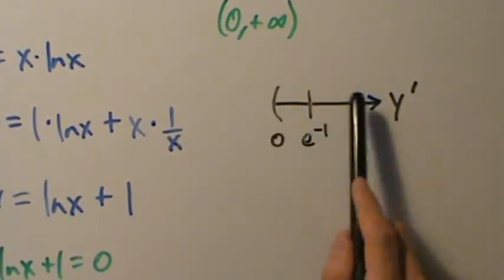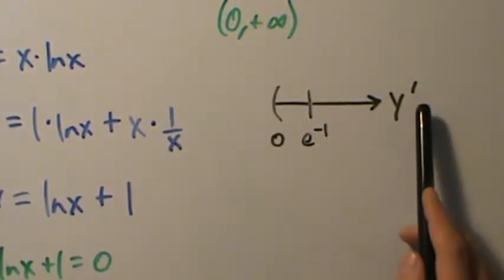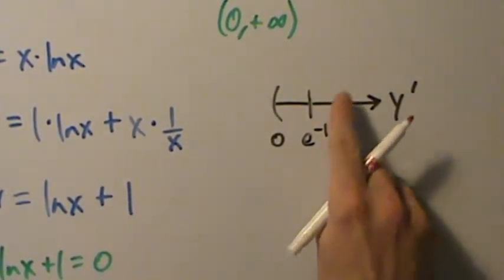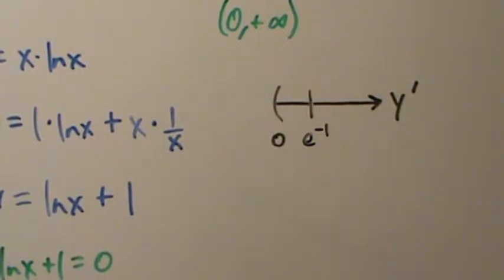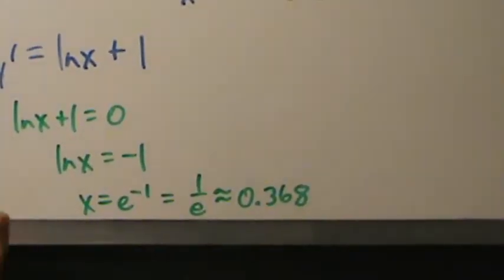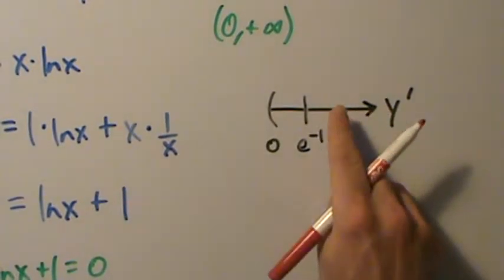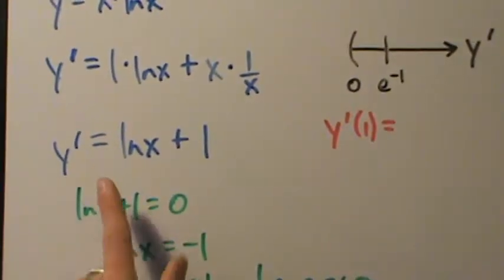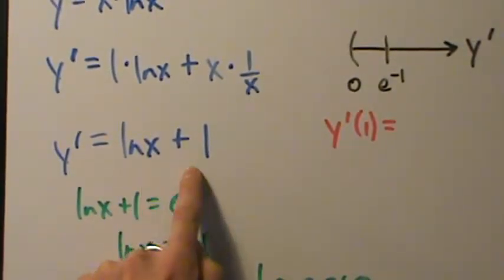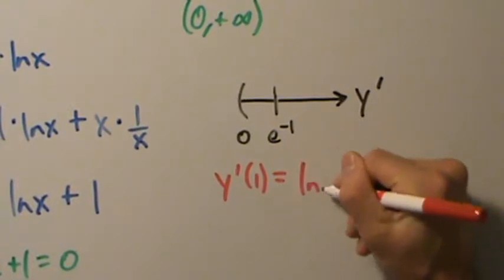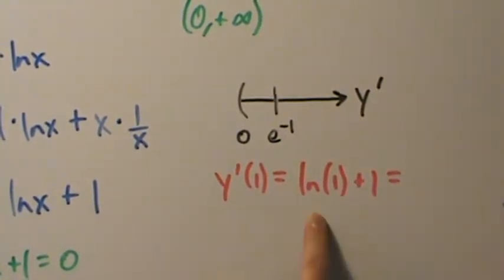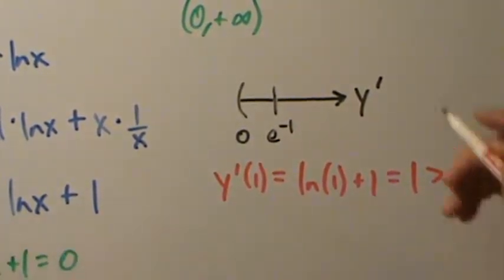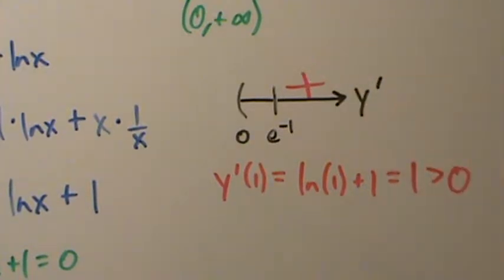Step three: determine the sign of the derivative in each interval. We want to pick one number from each interval and evaluate the derivative. Let's do the right interval first, since it'll be a little easier. e to the negative one is about 0.368, so let's pick the number one — that's in this interval. y prime of 1 equals natural log of 1 plus 1. Natural log of 1 is 0. 0 plus 1 is 1. 1 is positive. So the derivative is positive in this entire right interval.